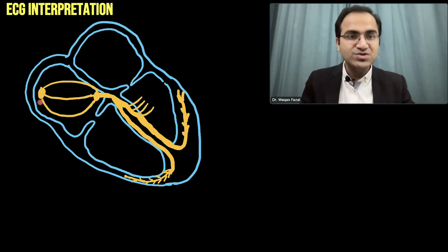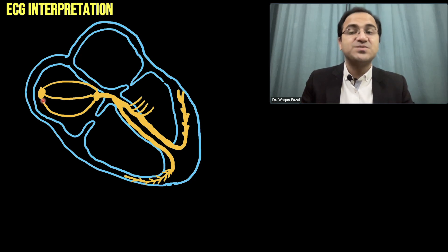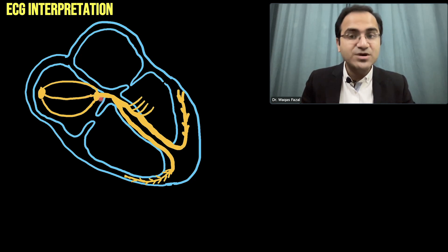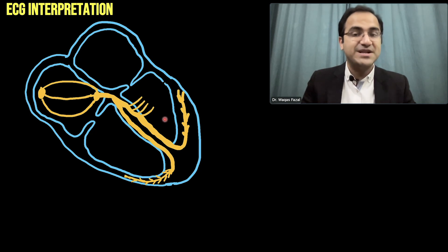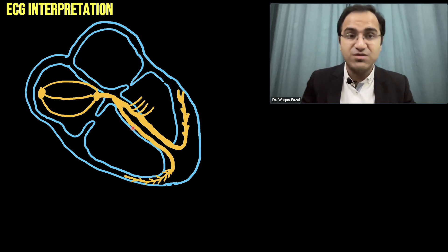Normally the SA node produces electrical currents. Those electrical currents spread through the internodal pathways to the AV node, and from the AV node they go to the right and left bundle branches, resulting in contraction of the ventricles.